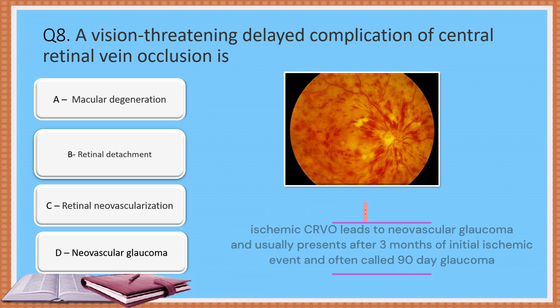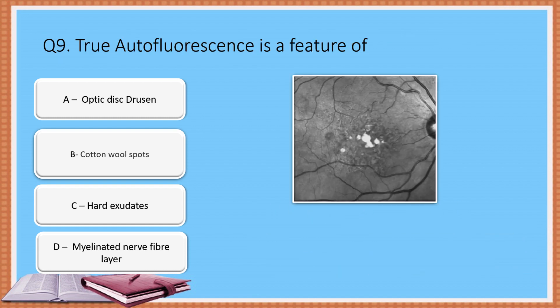Question 9: True autofluorescence is a feature of — Option A: Optic disc drusen. Option B: Cotton wool spots. Option C: Hard exudates. Option D: Myelinated nerve fiber layer. The correct answer is optic disc drusen.